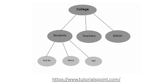In this example, we have a parent node called college. From there, it has three children: students, teachers, and admins. From there, the child node student then has three more children: role number, name, and age.